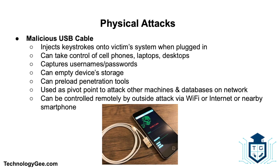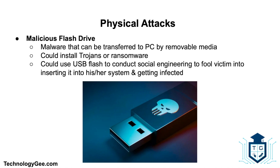Now let's talk about physical attacks. The first is a malicious USB cable. A malicious USB cable can be used to compromise systems — different USB cables are designed to infect connected devices with malware by injecting keystrokes onto the victim system when plugged in. These cables can take control of a user's cell phone, laptop, or desktop. Usernames and passwords are the first bits to go, then the connected device's storage is emptied, a preloaded penetration tool springs into action, and the connection is used as a pivot point to attack other machines and databases on the network — all controlled remotely via Wi-Fi or a nearby smartphone.